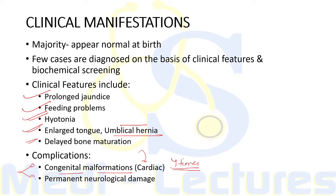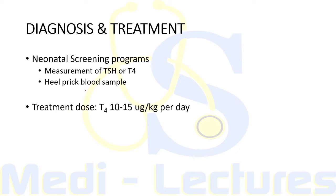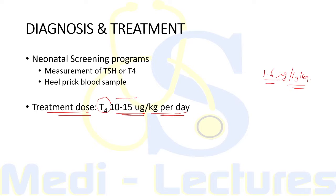Because of the severe neurological consequences of congenital hypothyroidism, neonatal screening programs have been established, based on measurement of TSH or T4 in the heel-prick blood sample. When diagnosis is confirmed, treatment is started with levothyroxine 10 to 15 microgram per kg per day. In adults the dose is usually 1.6 microgram per kg per day, but in neonates it is 10 to 15 microgram — almost 8 to 10 times that of adults.